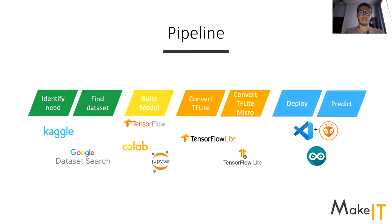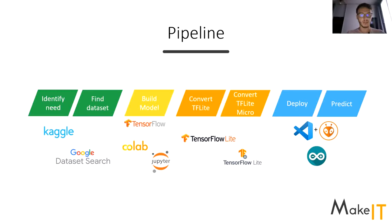We have to find a dataset that responds to our needs. That takes us to the second step: find a dataset. We'll go on Kaggle and find one. We'll see how to include a Kaggle dataset into a Google Colaboratory notebook. Once done, we'll build our model that takes temperature, humidity, and pressure as input and outputs one of our five classes using TensorFlow and Google Colaboratory. After the model is built, we convert it to TensorFlow Lite, then to TensorFlow Lite Micro, and deploy it on the board using Arduino IDE or VS Code with PlatformIO.